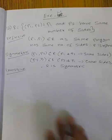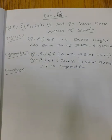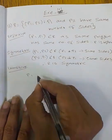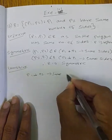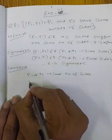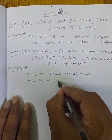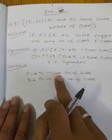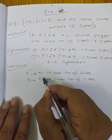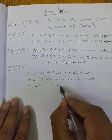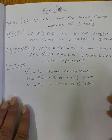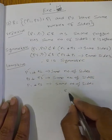For transitivity: if (P1, P2) belongs to R and (P2, P3) belongs to R, then P1 and P2 have the same number of sides and P2 and P3 have the same number of sides. Therefore (P1, P3) belongs to R. So R is transitive.